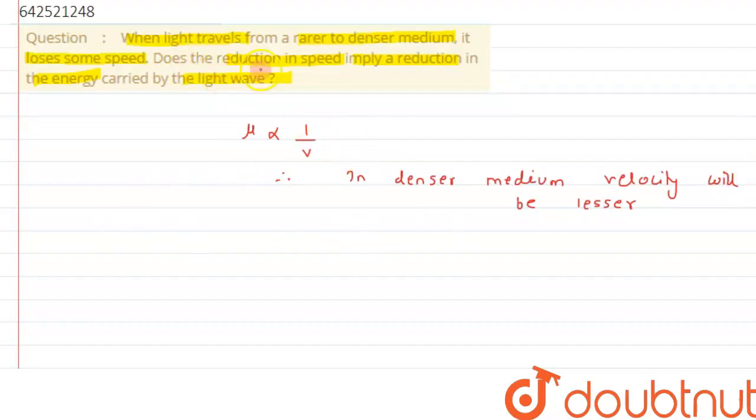Now in the second part, it says does the reduction in speed imply a reduction in energy? So we know energy that has been associated with the light wave is h nu, where nu is the frequency and frequency remains constant. Whenever the medium changes, frequency does not change. And h is also a constant over here. So energy remains the same.